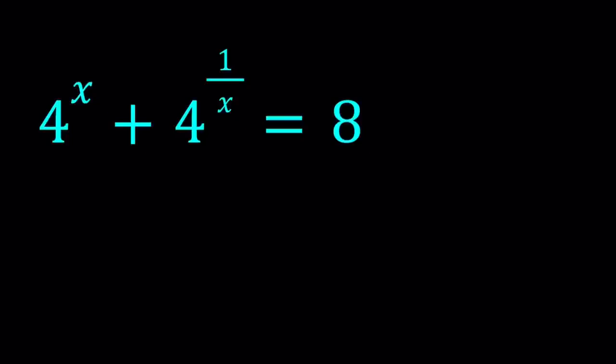First of all, 4 to the power x and 4 to the power 1 over x, they're always positive. We know that, right? So let's just suppose x is greater than 0.